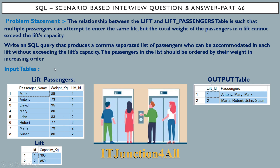We have to write a SQL query that produces a comma-separated list of passengers who can be accommodated in each lift without exceeding the lift's capacity. For lift ID 1 the capacity is 300, so we board passengers such that the sum of their weights doesn't exceed that. You can see that only three of the four passengers board lift 1, because adding the fourth causes the total weight to exceed 300. For lift ID 2, all four passengers can board because the sum of their weights is still within the limit of 350.